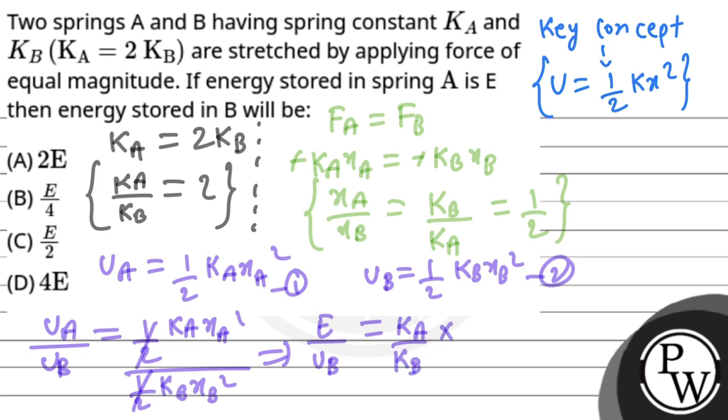Now we have KA upon KB equals 2 and XA upon XB equals 1 upon 2. So on solving this we will get UB will be equal to 4E.